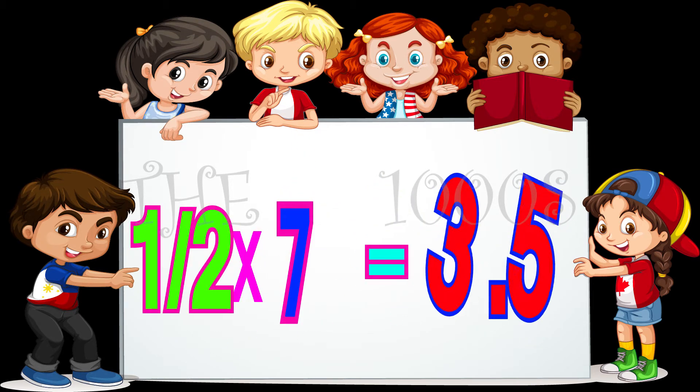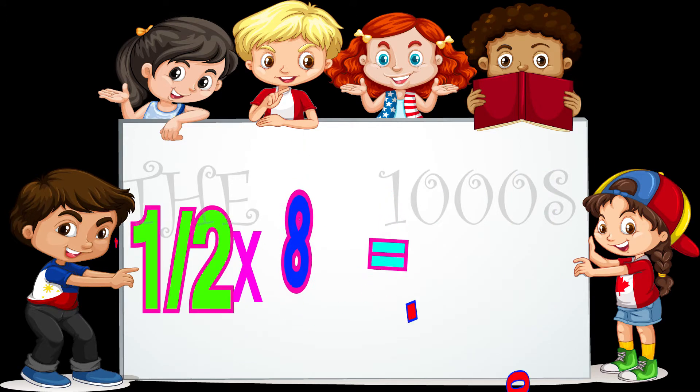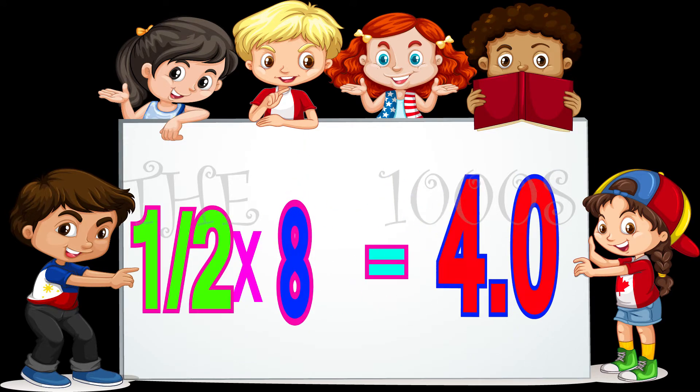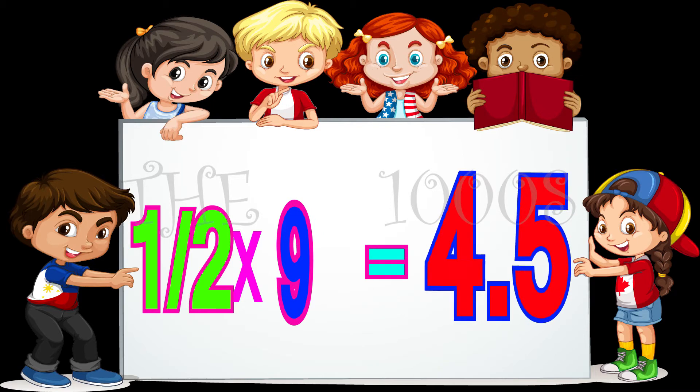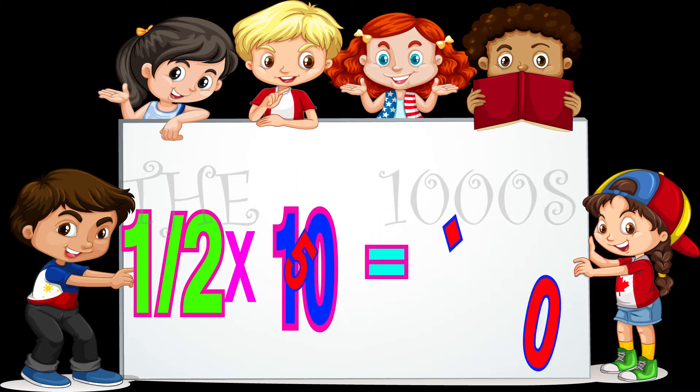Half eights are 4. Half nines are 4.5. Half tens are 5. So children, if you have listened and watched carefully, the table of half is just the table of five with a decimal in between the numbers.